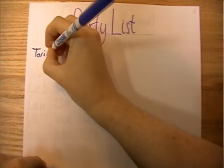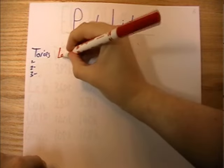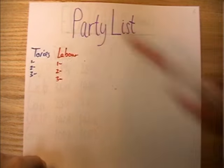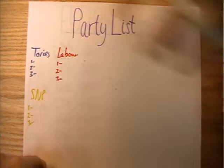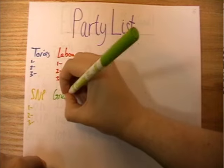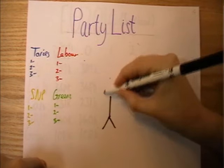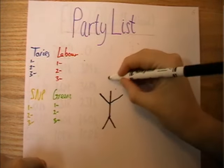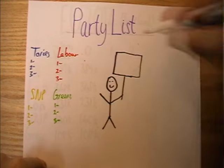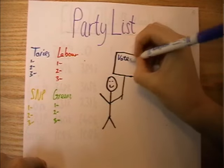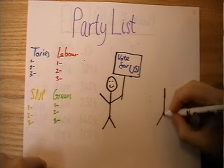Next, the party list system. This is used for the European Parliament, where the UK is broken up into regions, with Scotland being one of these regions. Political parties draw up lists of candidates, and then the voters pick which party they would like to support, rather than the candidates themselves. All the seats for that region are then distributed in line with the percentage of votes that each party got.